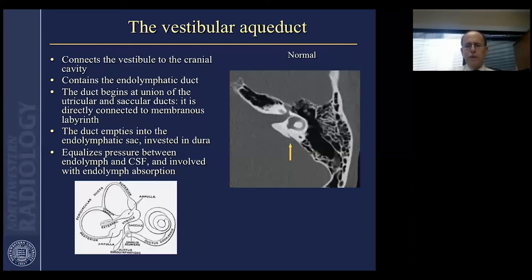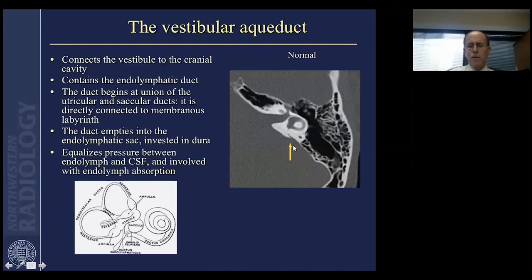The vestibular aqueduct can be seen at the level of the lateral semicircular canal and the vestibule — it's a very important structure with key pathologies, particularly in children, associated with its malformation. The vestibular aqueduct connects the vestibule to the cranial cavity and contains the endolymphatic sac and endolymphatic duct, which begins at the union of the utricular and saccular ducts and is directly connected to the membranous labyrinth. The duct empties into the endolymphatic sac posteriorly and is invested with dura, so that the membrane of the sac is permeable. CSF on its posterior margin is filtered through the membrane, keeping CSF in balance with perilymph and endolymph within the inner ear, serving to equalize pressure and is involved in endolymph absorption.